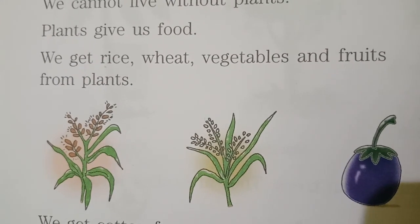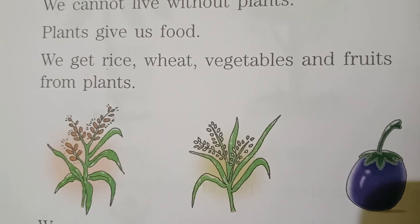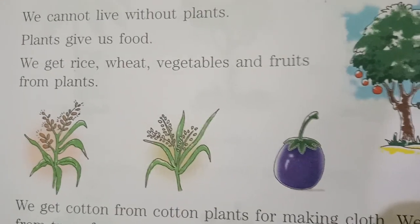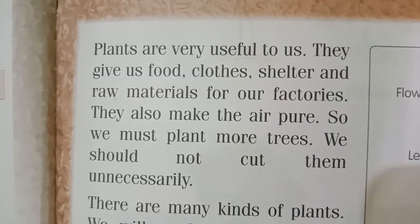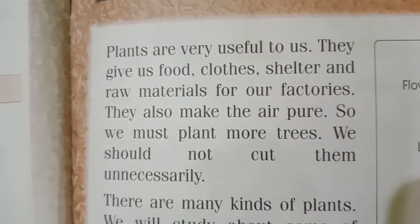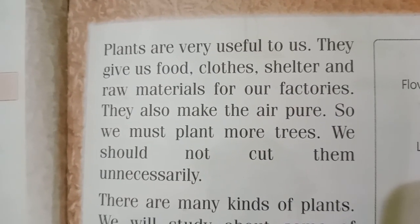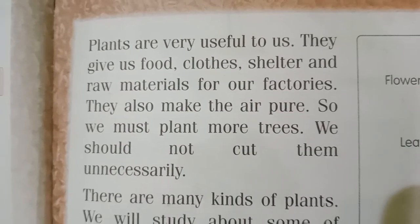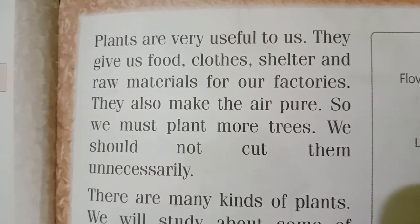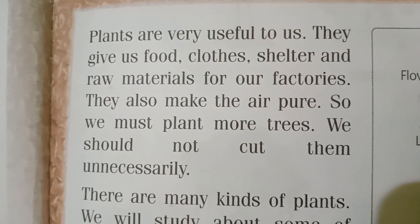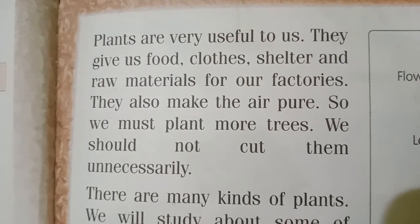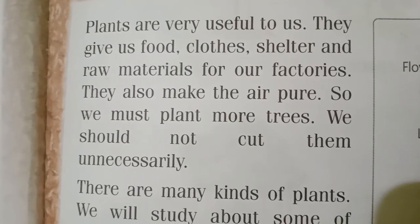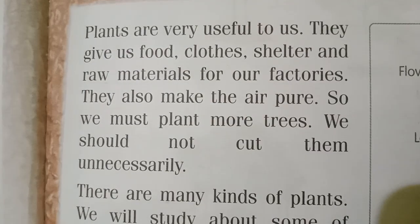Like we get rice, wheat, vegetables and fruits from plants. For making clothes they give us cotton. For our shelter they give us wood and raw materials for our factories. Like sugarcane, it is taken to the factories and then sugar is made.